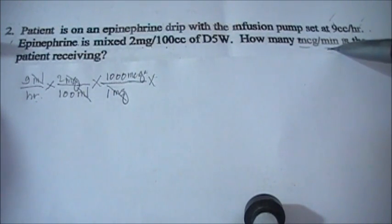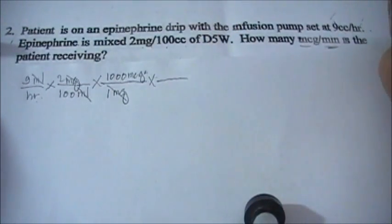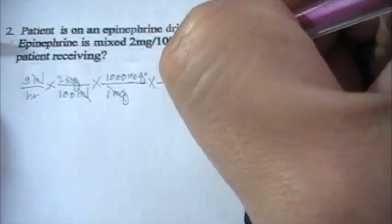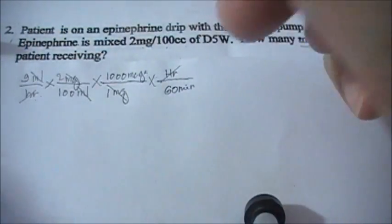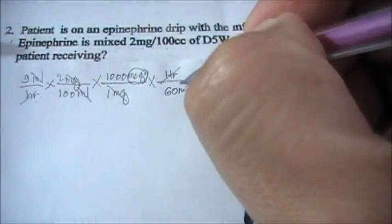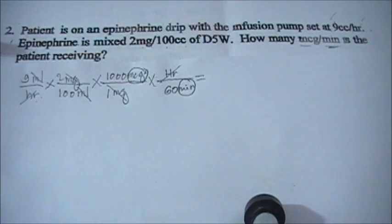So how are you going to do this? Of course you want to cancel that hour. So one hour is equivalent to how many minutes? 60 minutes. Okay, so we cancel hour there. So what do we have left here is micrograms per minute, so we're almost done, right?